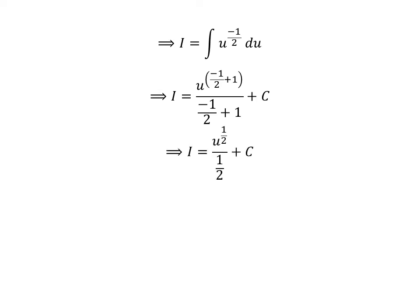As 1 plus minus half is equal to half, the exponent of u is half and the denominator is half. Further simplification gave us i is equal to 2 times square root of u plus capital C.